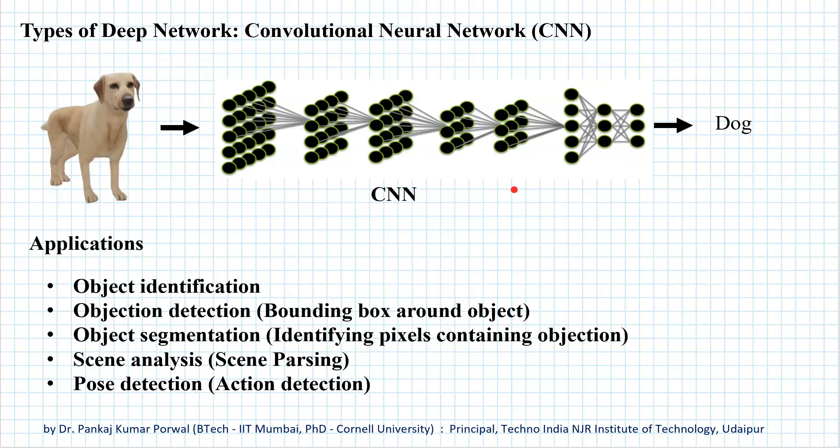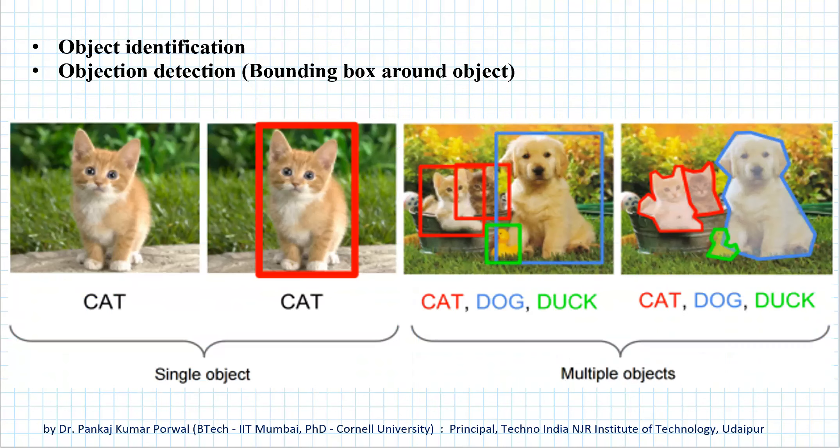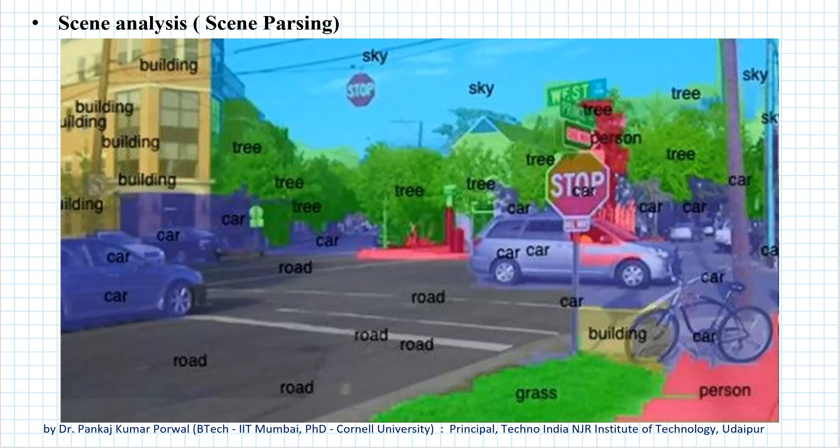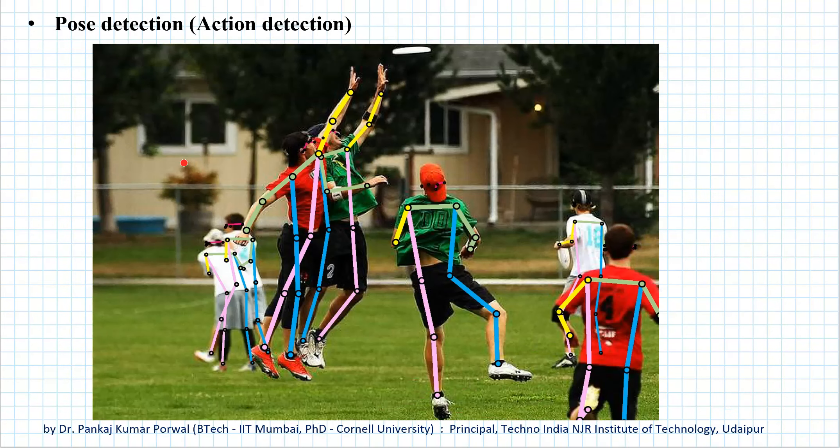Using this capability of deep convolutional neural networks, several applications have been developed for CNNs like object identification, object detection, object segmentation, scene analysis or scene parsing, and pose detection or action detection.